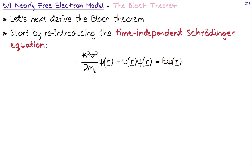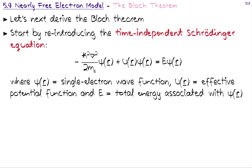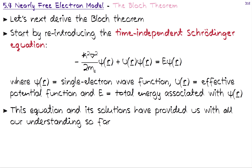On the right-hand side we have the energy associated with this wave function times ψ. What the Schrödinger equation tells us, once we have found the solution, is the wave function — how the electron moves, what kind of entity it is — and it also gives us the energy. Here ψ is our single-electron wave function, U is our effective potential function, and E is our total energy associated with this single-electron wave function ψ. This equation and its solutions have provided us basically all the understanding we have come to, and will continue to do so.